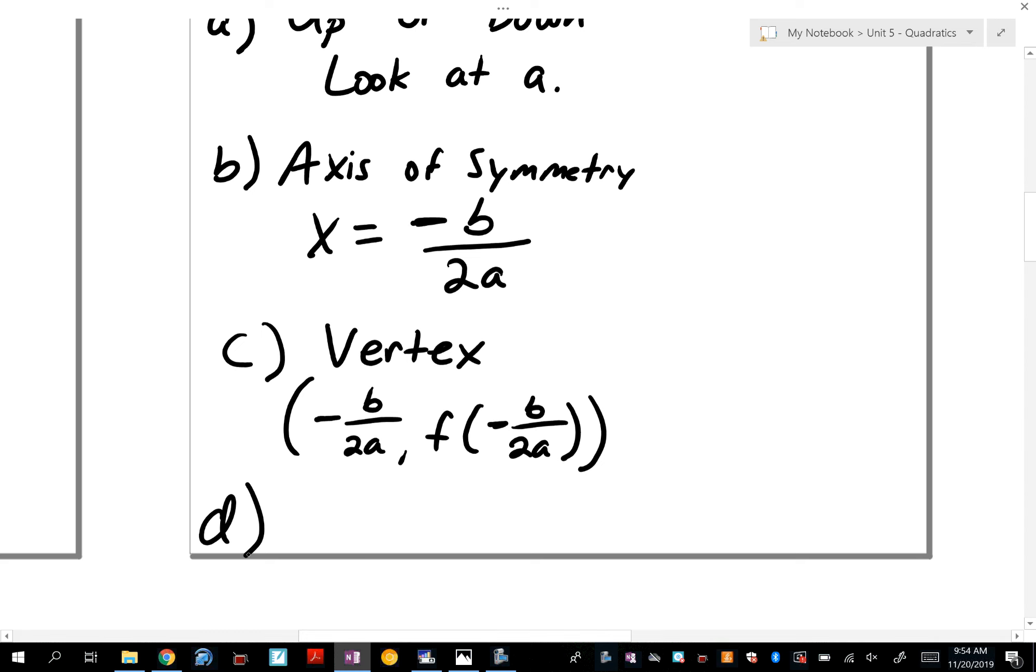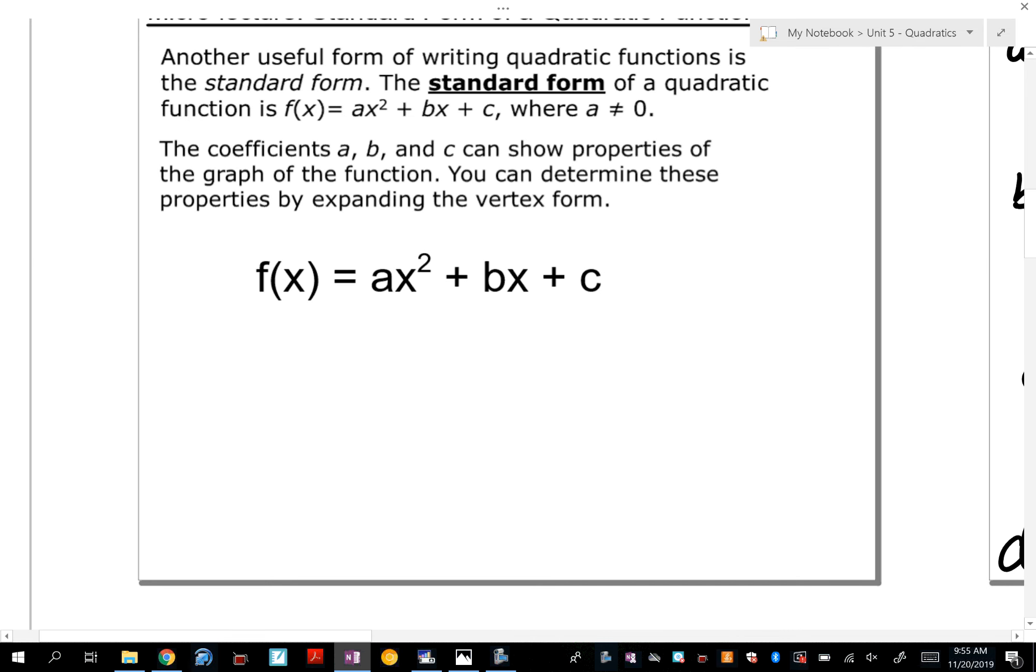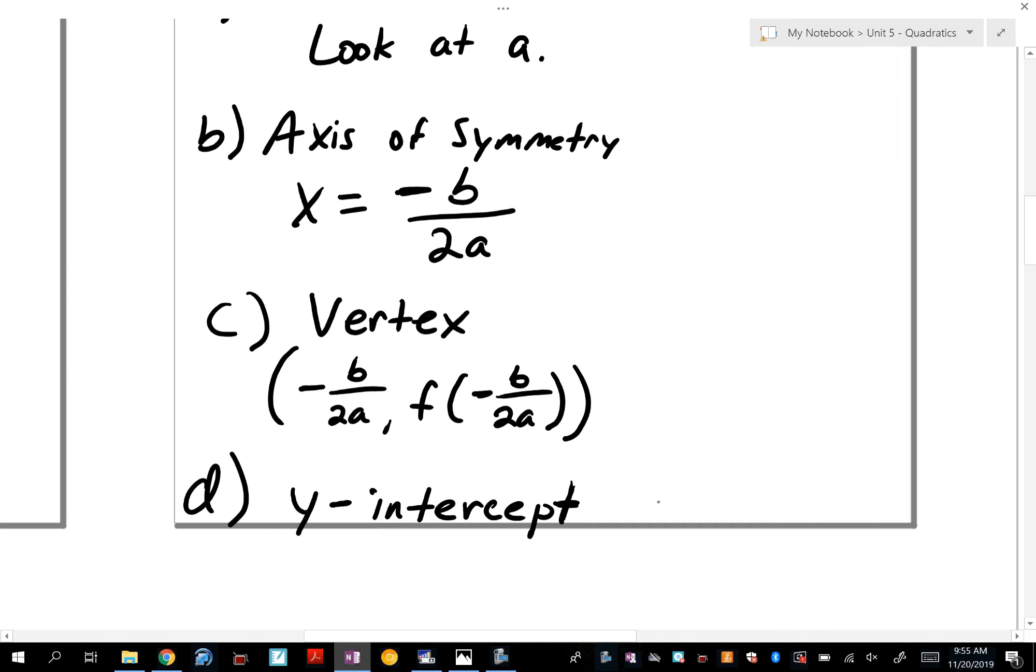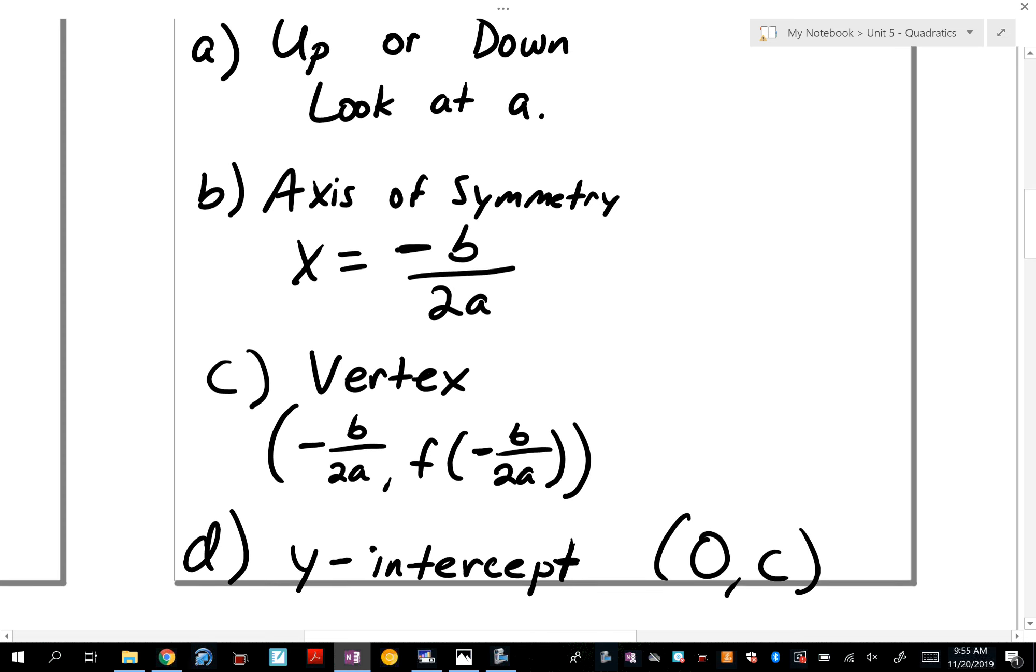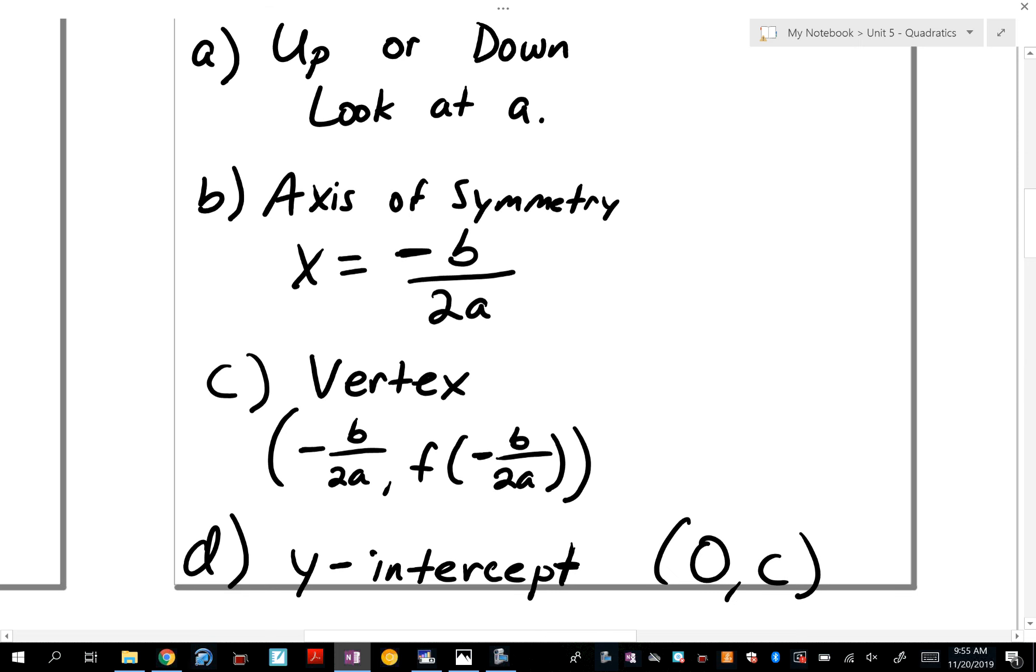What's the very last thing? The y-intercept. What did we have to do with vertex form to find the y-intercept? Plug in 0 for x. All right? Now, you can do that for standard form, but if you just take a quick peek over here, if you plug in 0 for x, that becomes 0. That becomes 0. So what's left? C. So that's why, in standard form, the y-intercept is always 0, c. Clarissa? Always? Always.